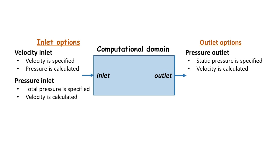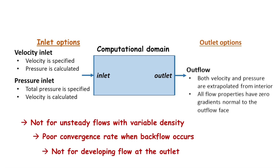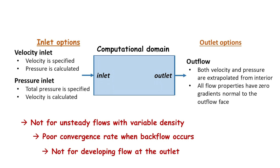A special case is the outflow boundary condition, in which both pressure and velocity information are not needed. Instead, flow properties are extrapolated from the interior and are forced to have zero gradients normal to the outflow face. This boundary condition is appropriate if the exit flow is fully developed. However, there are limitations in its application. First, it cannot be used with a pressure inlet boundary — we must use a velocity inlet. Second, it cannot be used for unsteady flows with variable density; it is intended for incompressible flows.